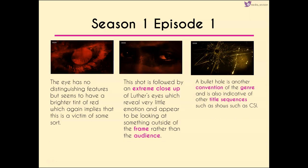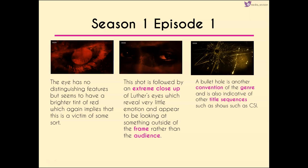The eye we see in the title sequence has no distinguishing features and seems to have a brighter red tint, which could imply this is a victim — particularly when compared to the extreme close-up of Luther's eyes, which reveal very little emotion and appear to be looking at something just outside of the frame rather than the audience. We have a bullet hole, which is a convention of the genre, also indicative of other title sequences such as CSI. We then get colored drops spreading through the title sequence like ink — representative of blood, revealing Luther's silhouette.